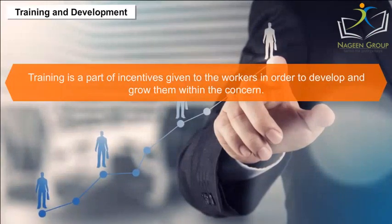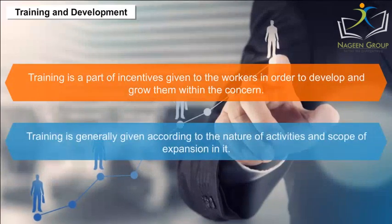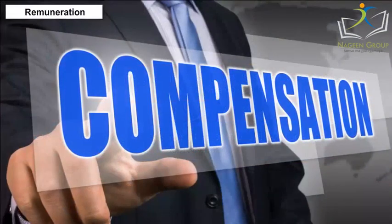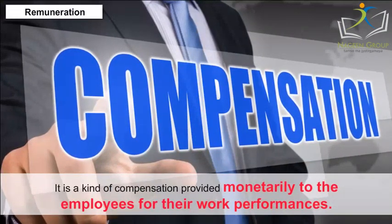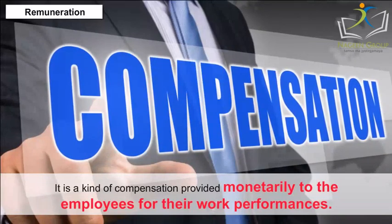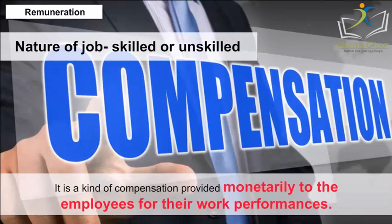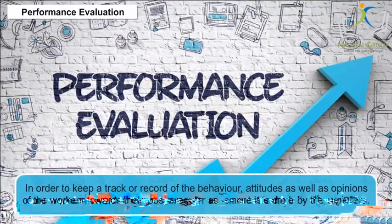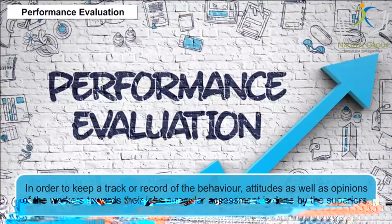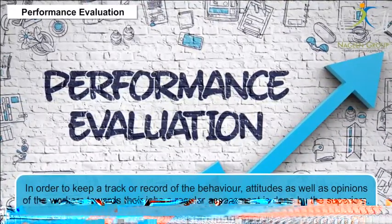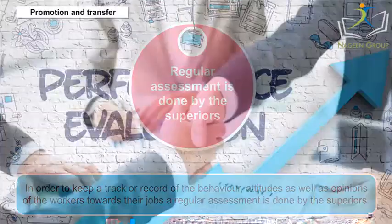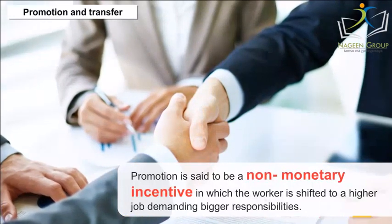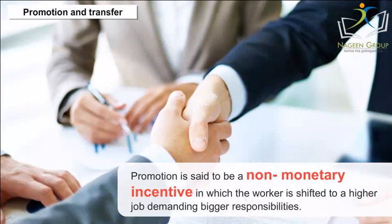Training and development is a part of incentives given to workers to help them develop and grow within the organization, generally given according to the nature of activities. Remuneration is a kind of monetary compensation provided to employees for their work performance, given according to the nature of the job — skilled or unskilled, physical or mental. Performance evaluation involves regular assessment of behaviour, attitudes and opinions of workers towards their jobs. Promotions and transfers are also part of the staffing process, where promotion is a non-monetary incentive in which a worker is shifted to a higher job with bigger responsibilities.